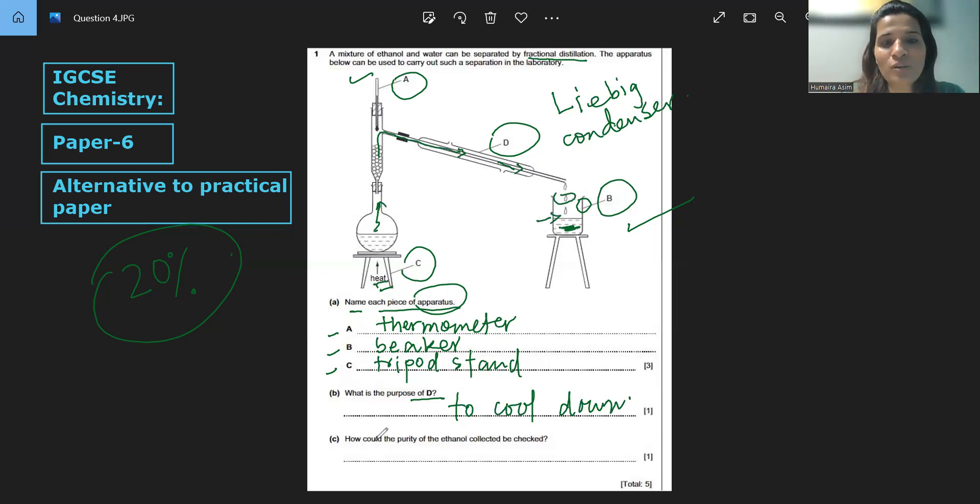And finally, how could the purity of ethanol collected be checked? What we can do is measure the boiling point. It will tell us whether it is pure or not, because we know that pure substances will always have sharp melting and boiling point.